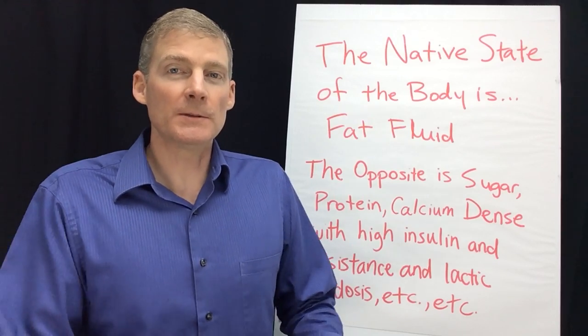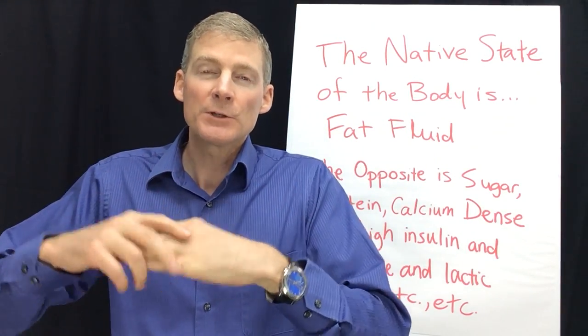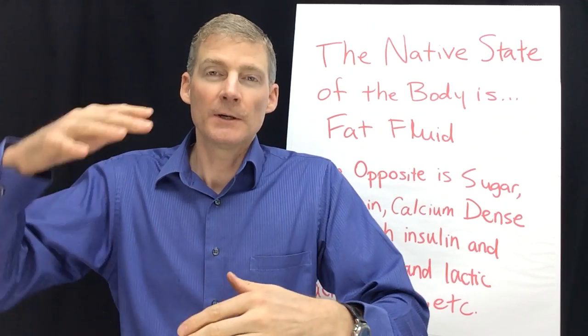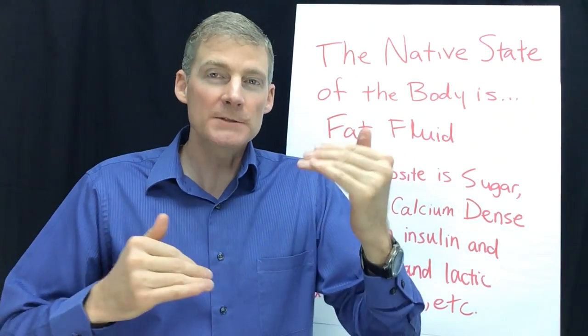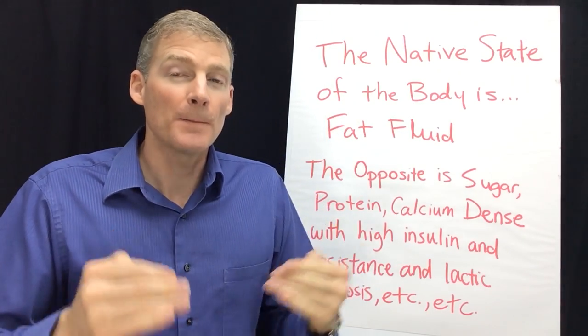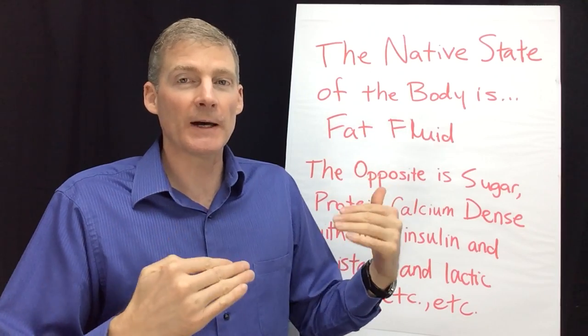The answer is to get the amount of fat in your blood up higher than the sugar burning nutrients like carbs, sugar, protein. Those need to be lower than the fat in the blood. What that does then is it makes your cells and your mitochondria in your cells burn fat, and that's the ideal state, that's the native state of the body.